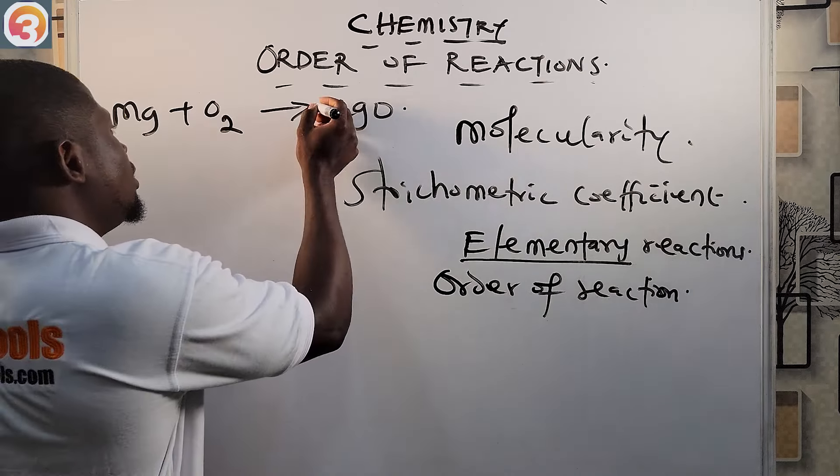To balance the equation, if you put a 2 in front of MgO it affects both Mg and O in the product, giving two atoms of each. Then you need two atoms of magnesium on the reactant side as well. So the balanced equation is: 2Mg + O₂ → 2MgO. We now have two atoms of magnesium and two atoms of oxygen on both sides.